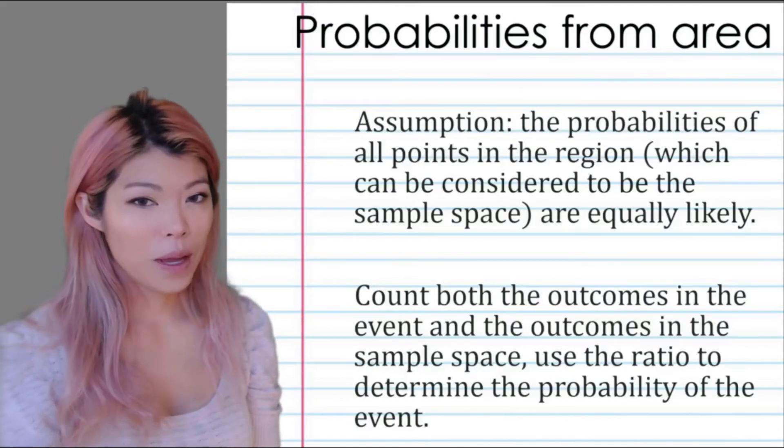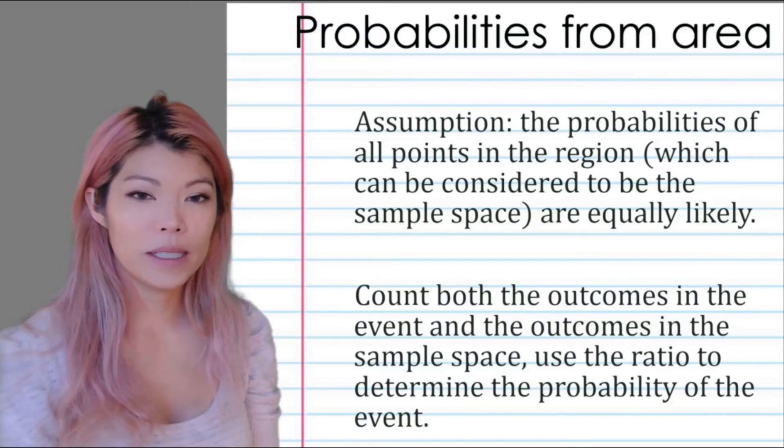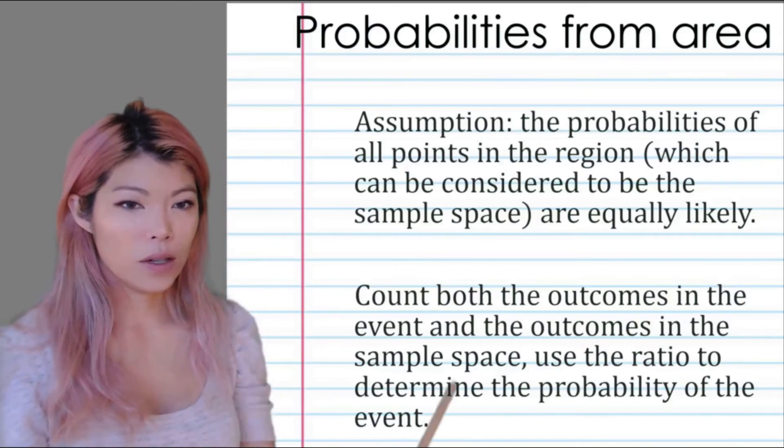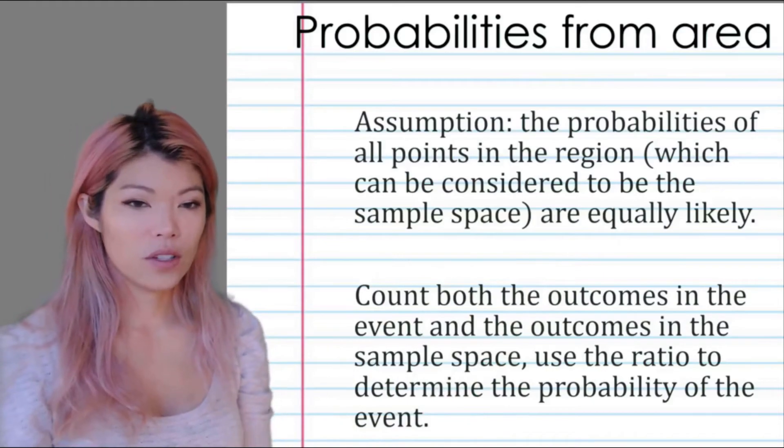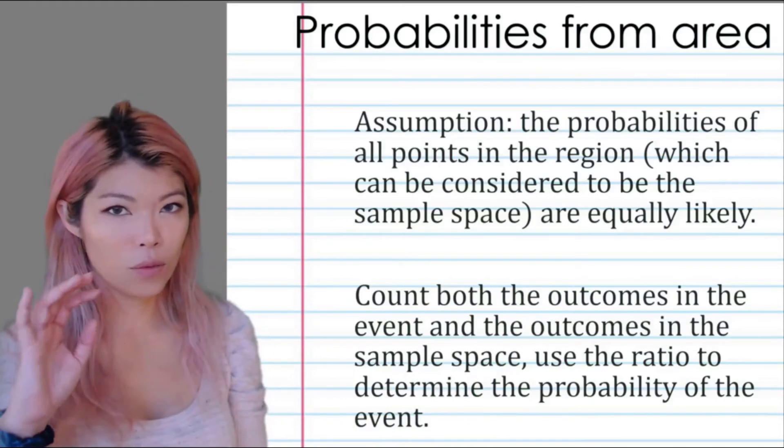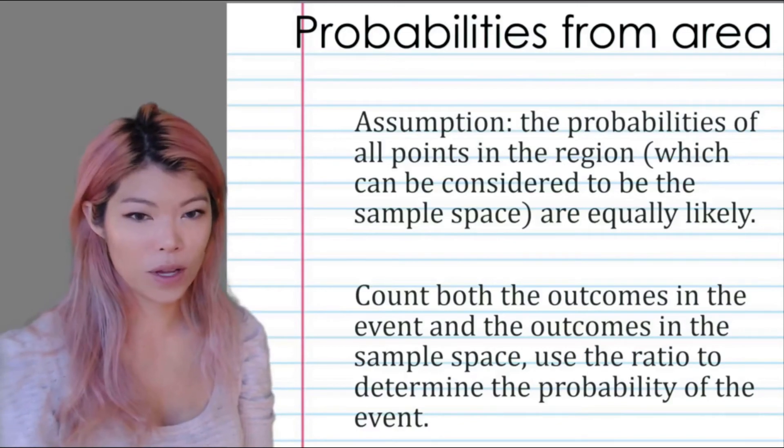Lastly, probabilities from area. We assume that the probabilities of all points in an area are equally likely, and we just count the probability of the area we want over the total probability that we can have.